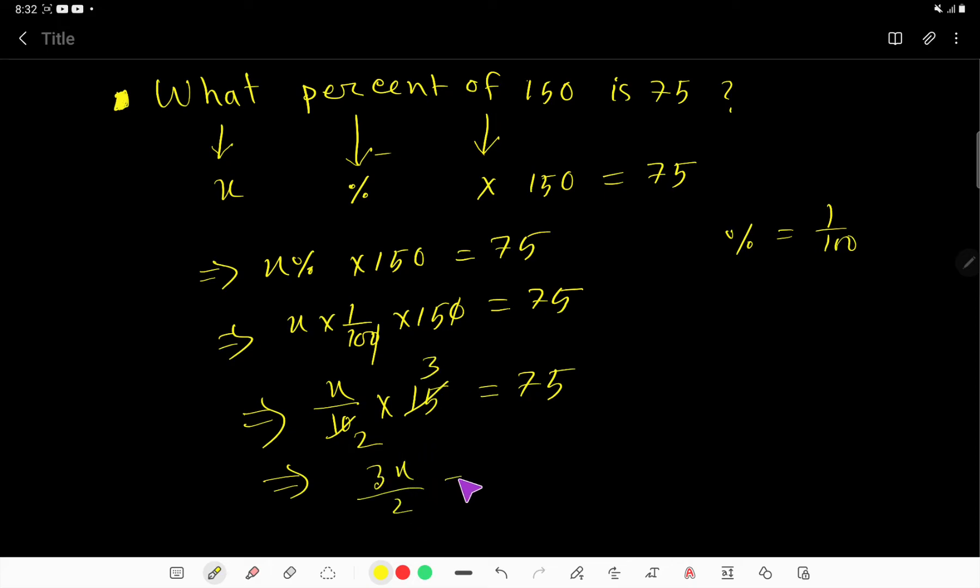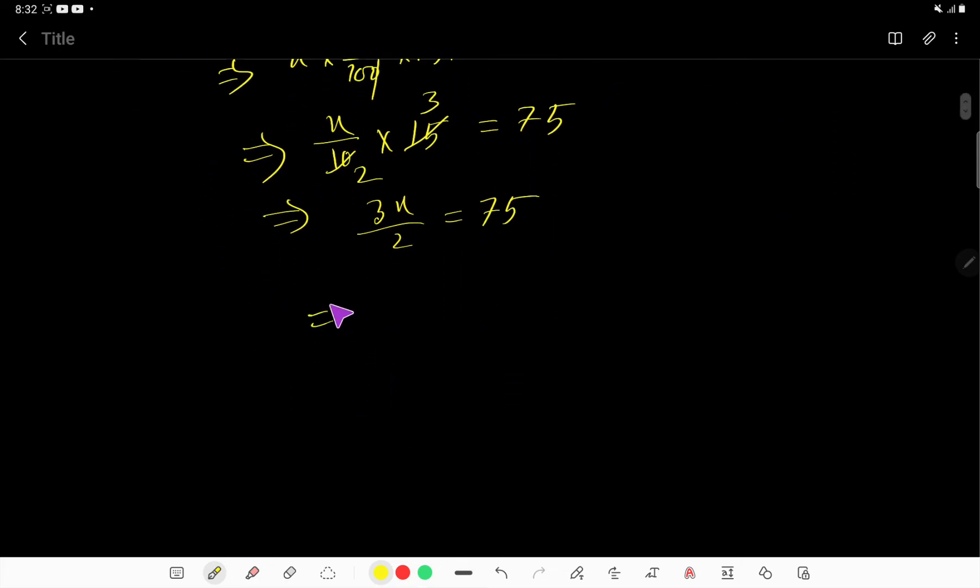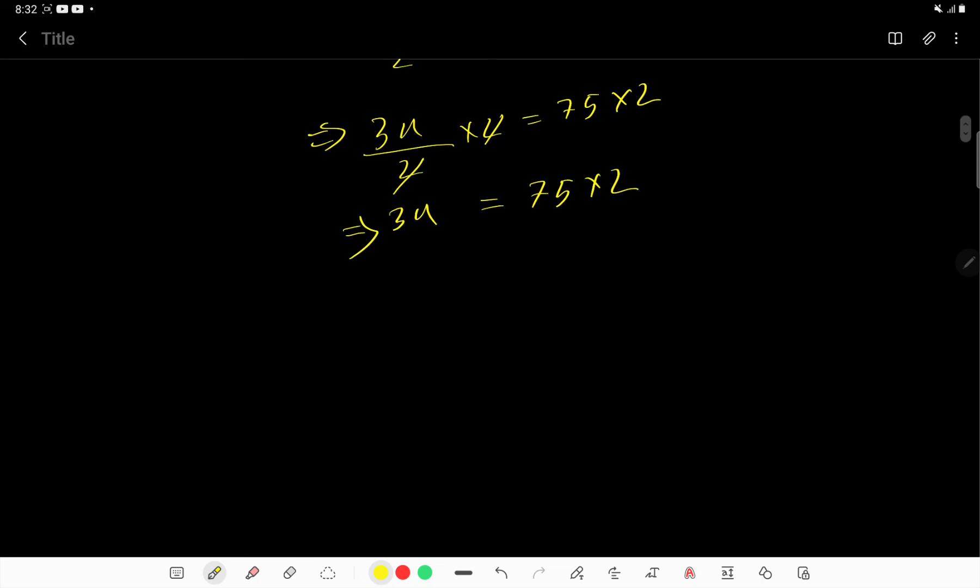So look, 3x, right, 3x. We can multiply both sides by 2. Then these two, these two cancel each other, so we are getting here 3x equal to 75 times 2.